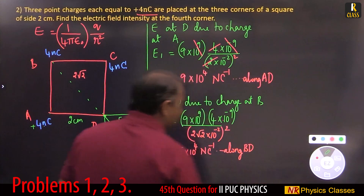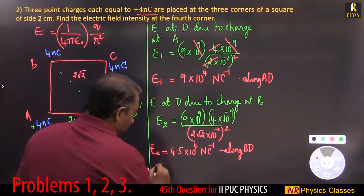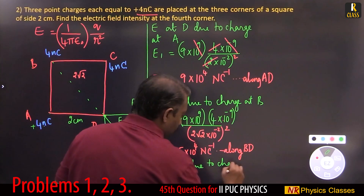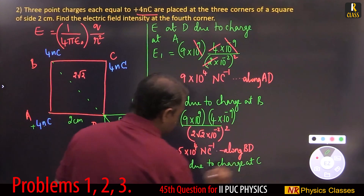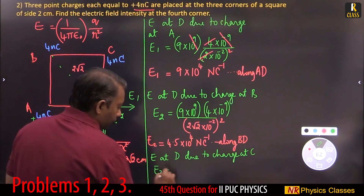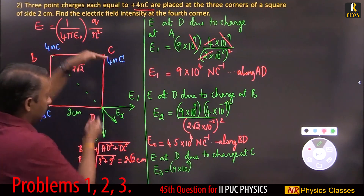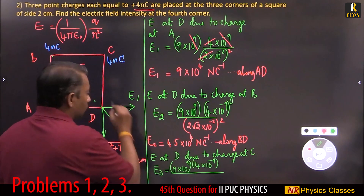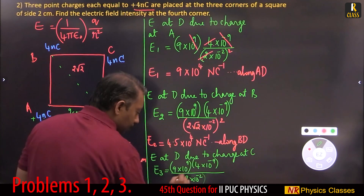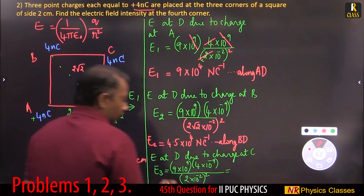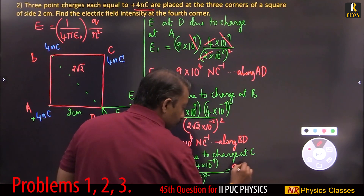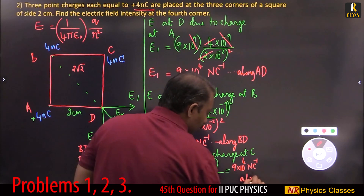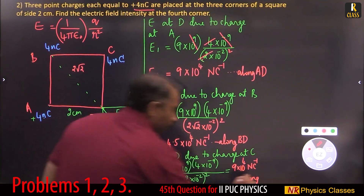Similarly, E3 is due to the charge at C. Electric field at D due to charge at C: E3 = 9×10⁹ × (4×10⁻⁹) / (2×10⁻²)². This is the same setup as E1, giving E3 = 9×10⁴ Newton per Coulomb.